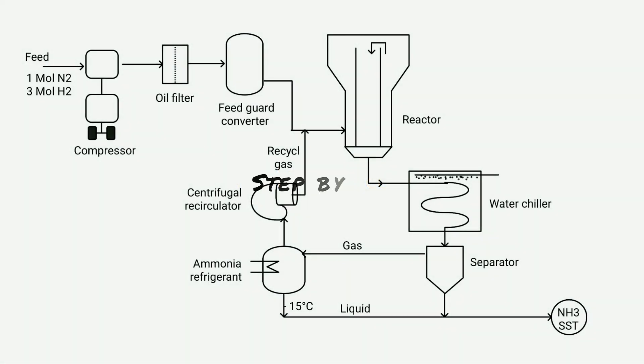Let us now understand the step-by-step ammonia manufacturing process with the help of flow sheet diagram. Firstly, one mole of nitrogen and three moles of hydrogen are compressed by a compressor and sent to an oil filter. Here the oil content and mainly compression oil coming with the feed is removed from the feed. Then the feed is sent to the feed guard converter. Through the converter, the mixed gas coming with nitrogen and hydrogen is converted and removed from nitrogen and hydrogen, after which purified nitrogen and hydrogen gas is obtained from here, which is sent to the reactor.